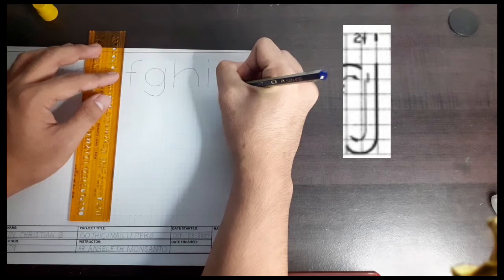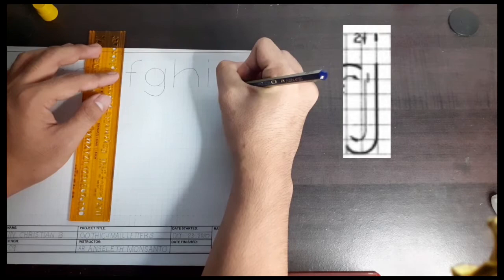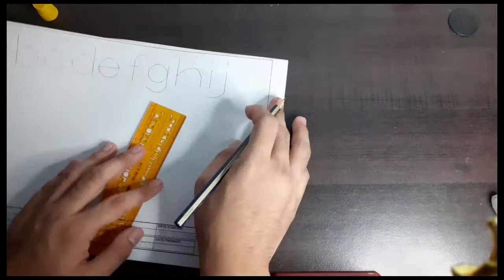Letter J is drawn in a single stroke, but for us to achieve its perfect straight line, we have to use the ruler. Its dot is the same with the dot of letter I.